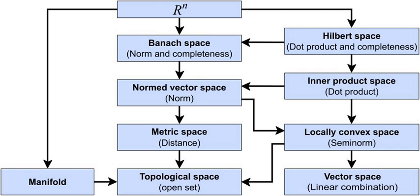In mathematics, a space is a set with some added structure. While modern mathematics uses many types of spaces, such as Euclidean spaces, linear spaces, topological spaces, Hilbert spaces, or probability spaces, it does not define the notion of 'space' itself. A space consists of selected mathematical objects that are treated as points, and selected relationships between these points.